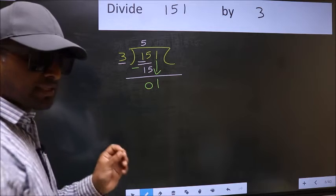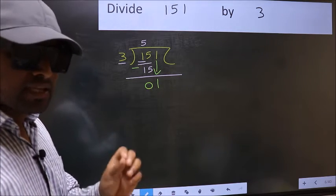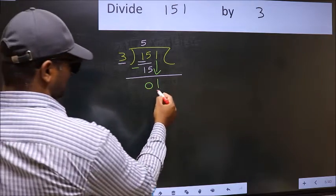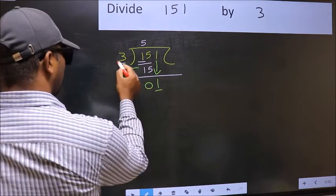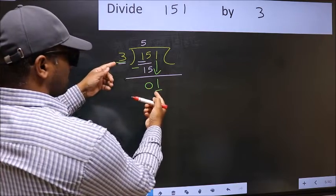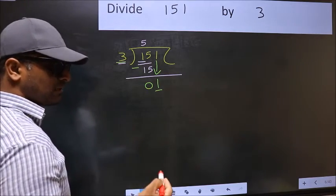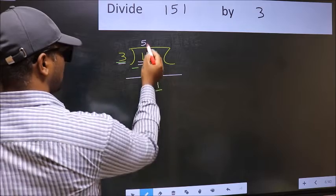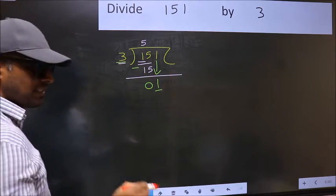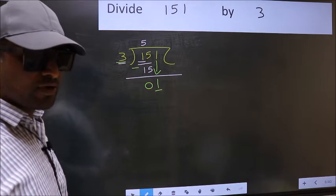After this step, the mistake happens. And the mistake is this. Here we have 1 and here 3. 1 is smaller than 3. So, what many do is they directly put a dot and take 0 here. Which is wrong. Why is it wrong?